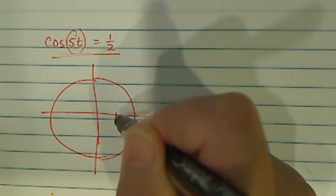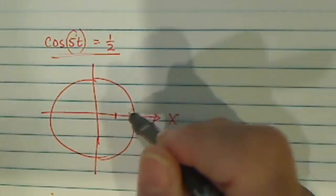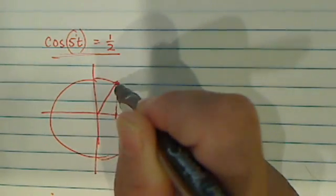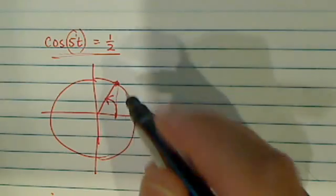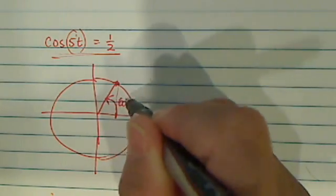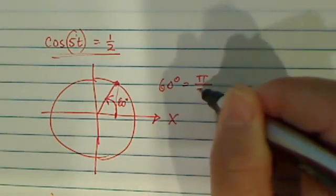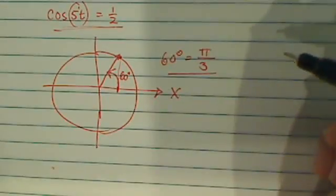Since cosine is the x value, what you want to do is you find a half point here and you draw it upward. This gives you the reference angle. In our case here, it's 60 degrees. 60 degrees are equal to pi over 3. So this is where our reference point is.